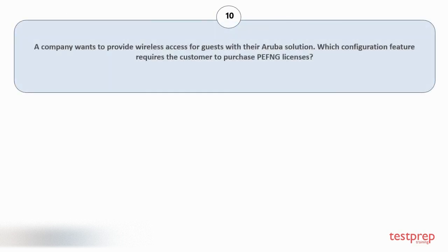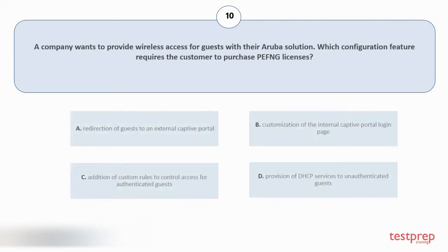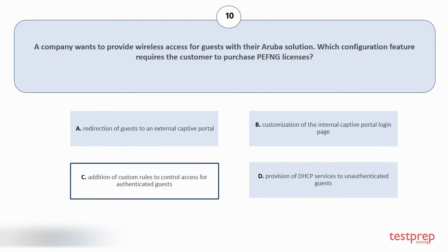Question number 10: A company wants to provide wireless access for guests with their Aruba solution. Which configuration feature requires the customer to purchase PEFNG licenses? Option A: Redirection of guests to an external captive portal. Option B: Customization of the internal captive portal login page. Option C: Addition of custom rules to control access for authenticated guests. Option D: Provision of DHCP services to unauthenticated guests. The correct answer is option C.